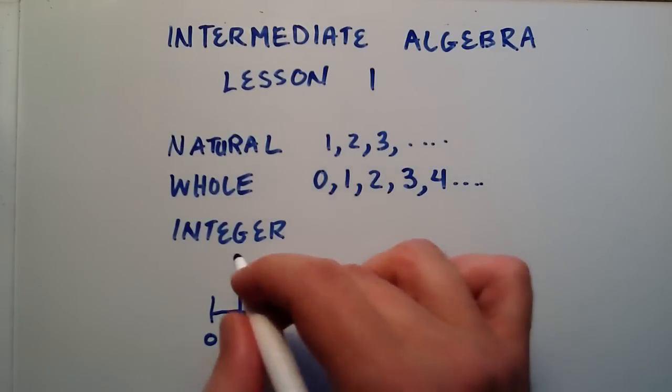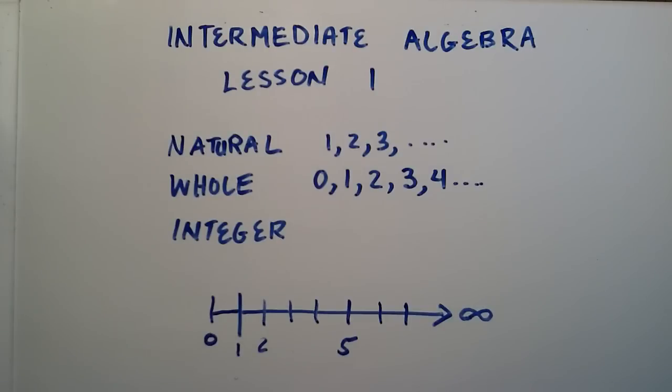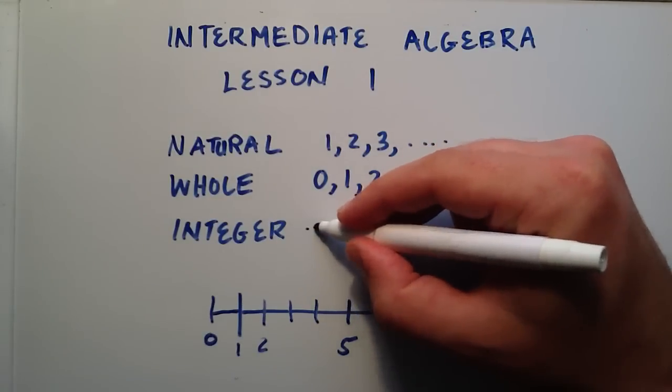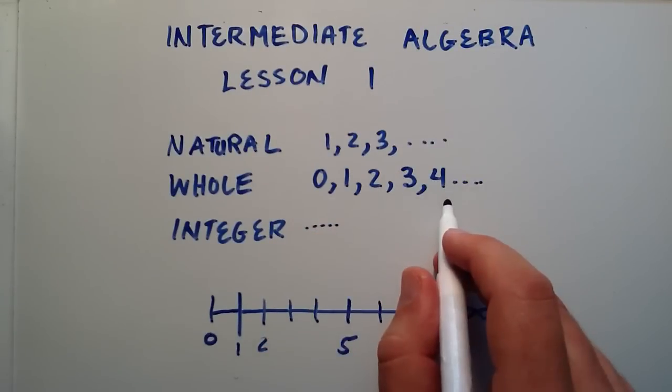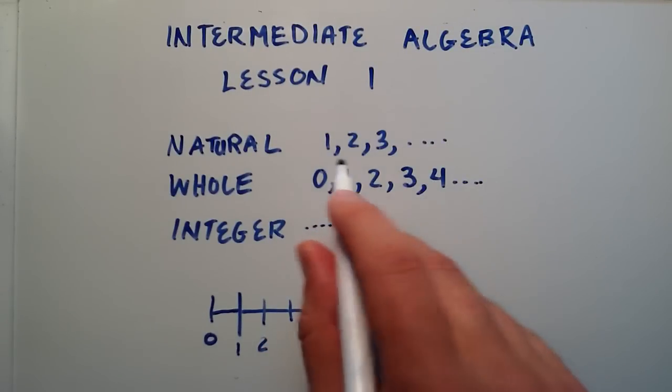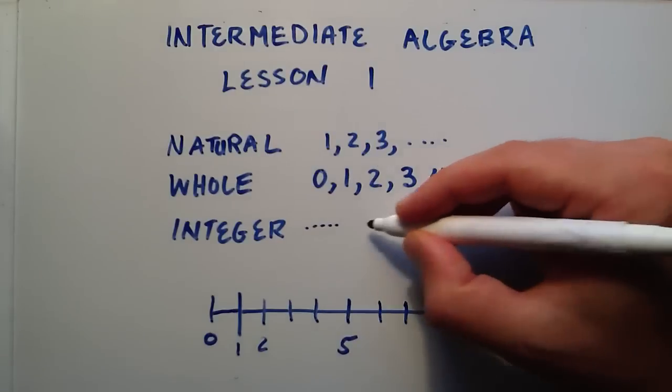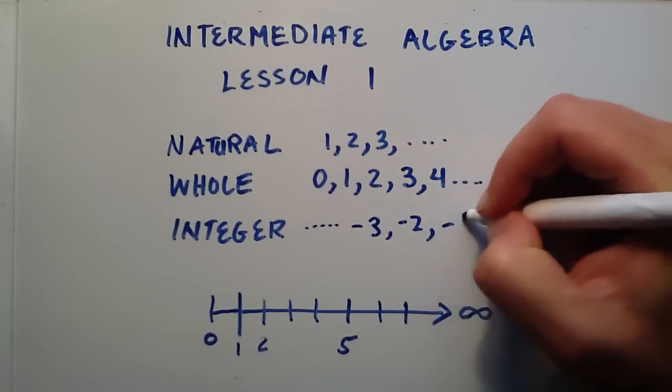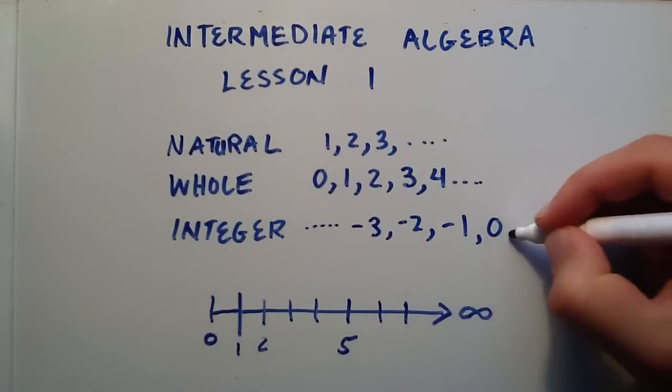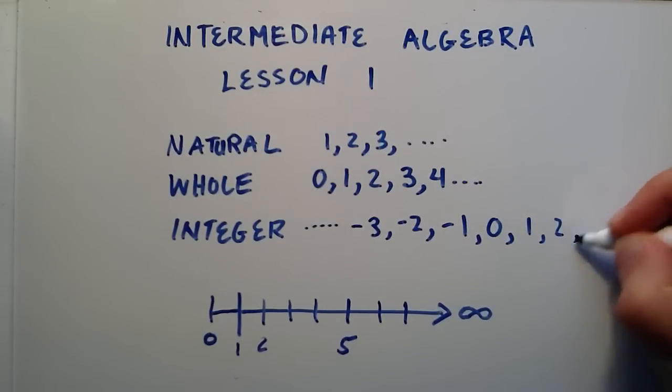And the last type of number that I want to talk about is the integer. Now integers include all the same numbers as the whole numbers, but they also include the negatives of the natural numbers. So we can have negative 3, negative 2, negative 1, 0, 1, 2, 3, and so on.